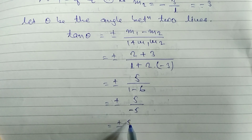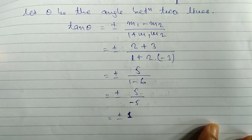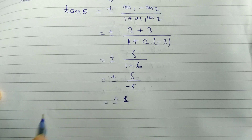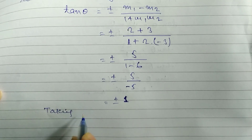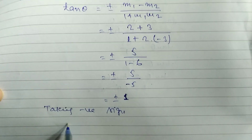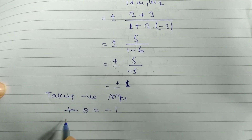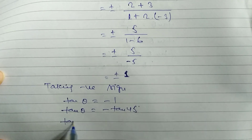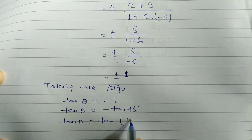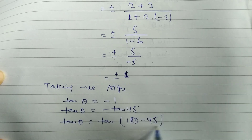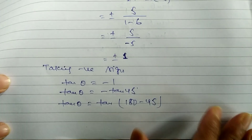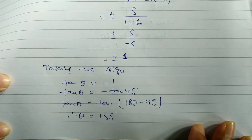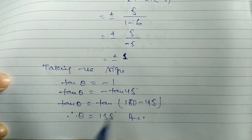This simplifies to plus or minus 1. Since we need the obtuse angle, we take the negative sign. So tan theta equals minus 1, which means tan theta equals tan 45 degrees in the second quadrant. We write tan theta equals tan(180 minus 45), which equals minus tan 45. Therefore theta equals 180 minus 45, which gives theta equals 135 degrees. This is the answer.